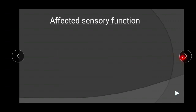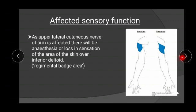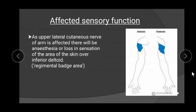In affected sensory functions, there will be loss of sensation over the inferior portion of deltoid due to affected upper lateral cutaneous nerve of arm. This is the portion anteriorly over which there will be loss of sensation and this is posteriorly. That's all for today. Thanks for watching and keep learning.